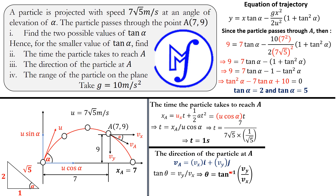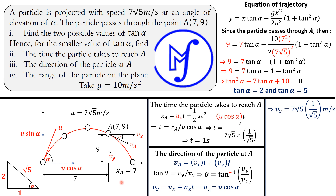To find v_x: since there is no acceleration in the horizontal direction, v_x = u_x = u·cos α. With u = 7√5 and cos α = 1/√5, we get v_x = 7√5 × (1/√5) = 7 meters per second.